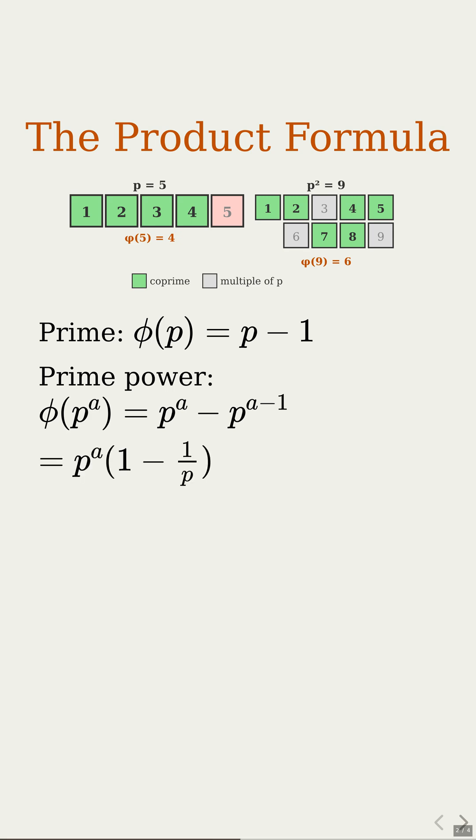So phi of p to the a is total numbers p to the a minus those p to the a minus 1 multiples, which factors as p to the a times 1 minus 1 over p. Nice. That already looks like a product with a 1 minus 1 over p factor.